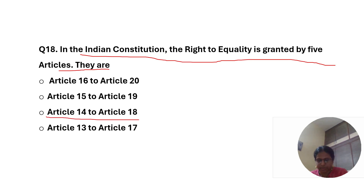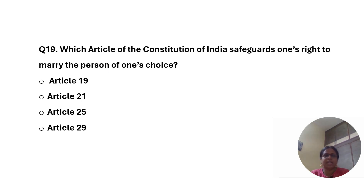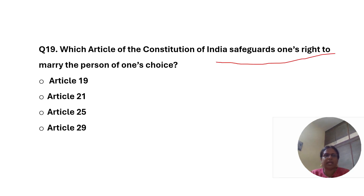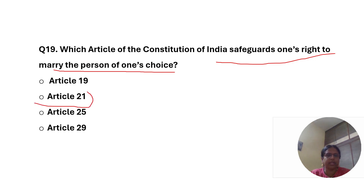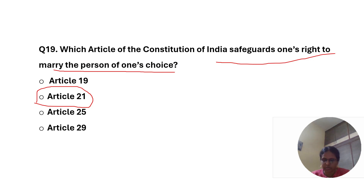Which article of the constitution of India safeguards one's right to marry the person of one's choice? The correct answer is the second one, Article 21, which safeguards one's right to marry the person of one's choice.